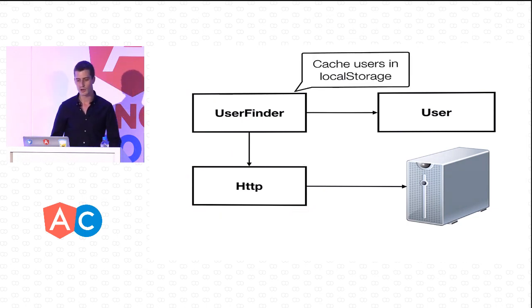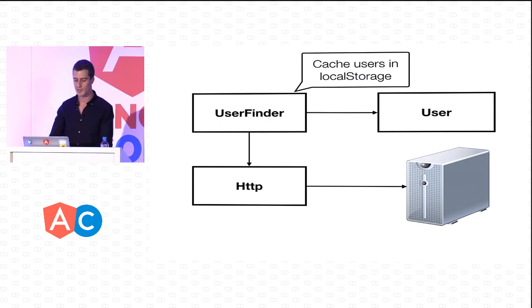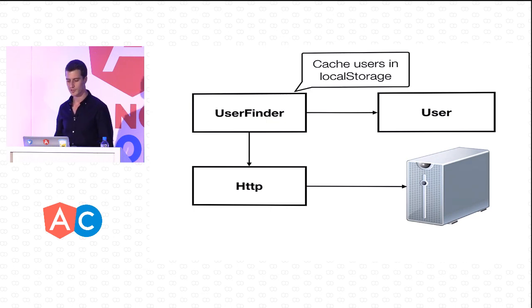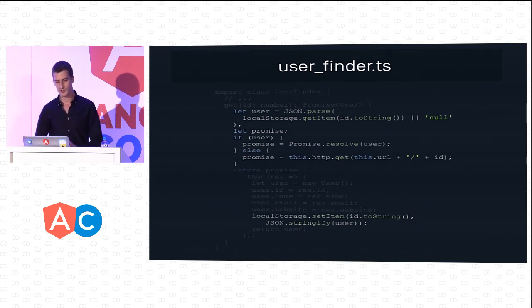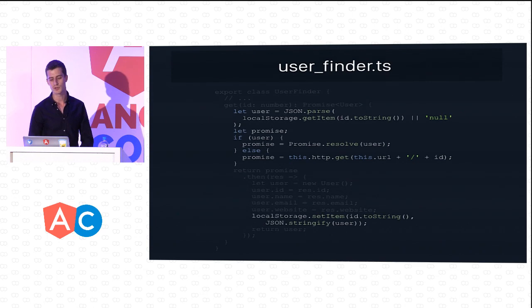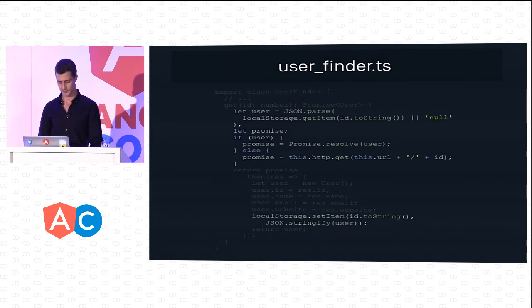A common optimization for user experience is to cache users in local storage. Users might change only every couple of months, so it doesn't make sense to send two requests for the same user. We send one request and cache it on disk. Here is the caching logic: we try to find the user in local storage, and if found, resolve a promise with it. Otherwise, we make a new HTTP GET request to the service, and once the promise resolves, we cache the user in local storage.